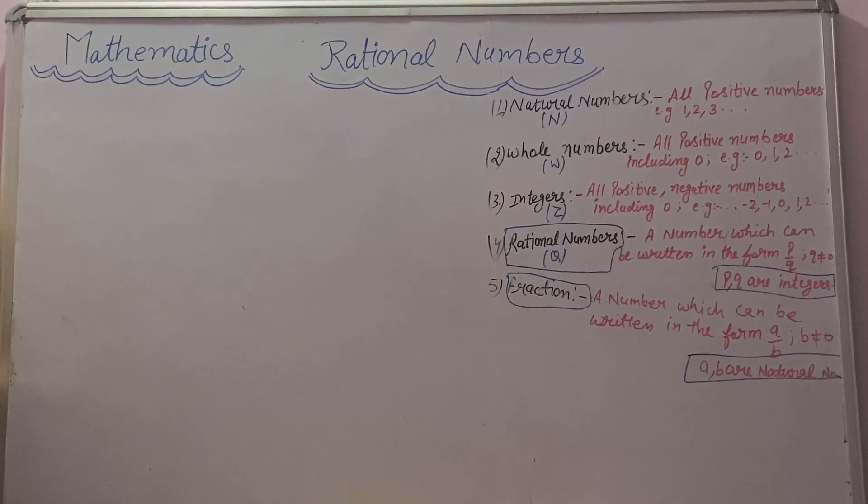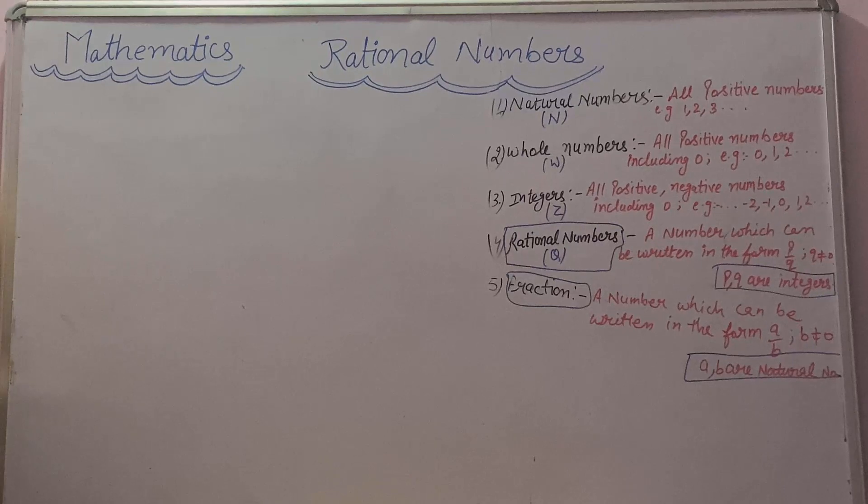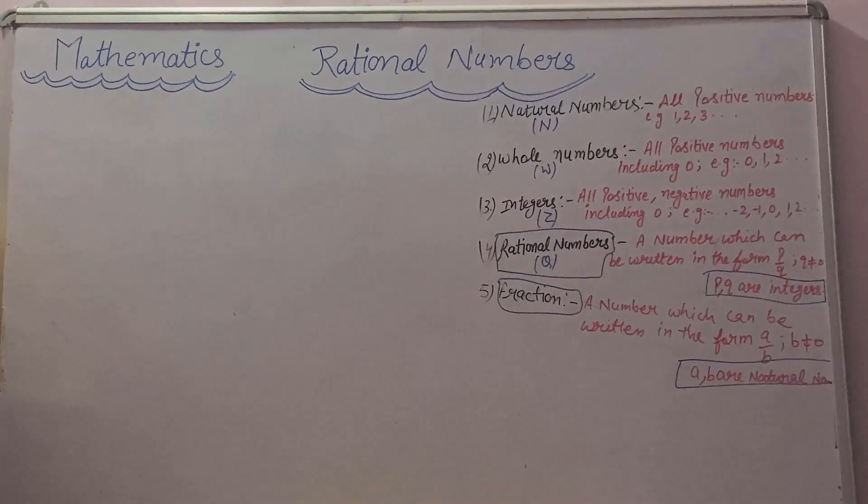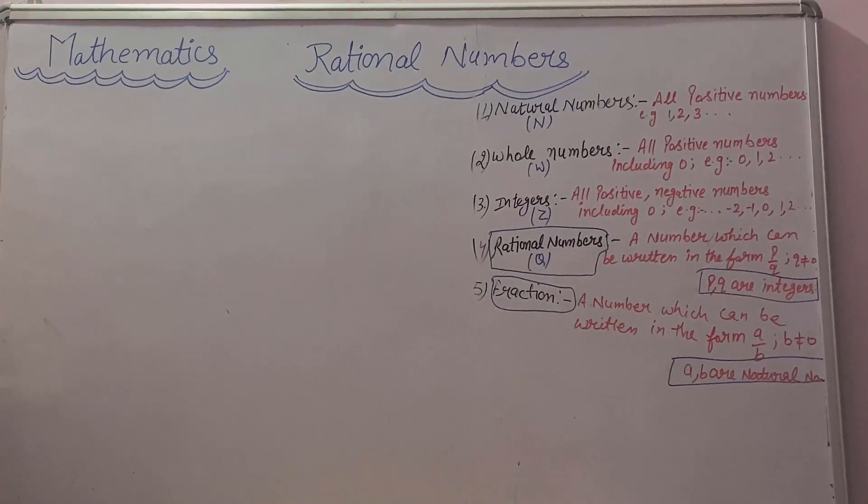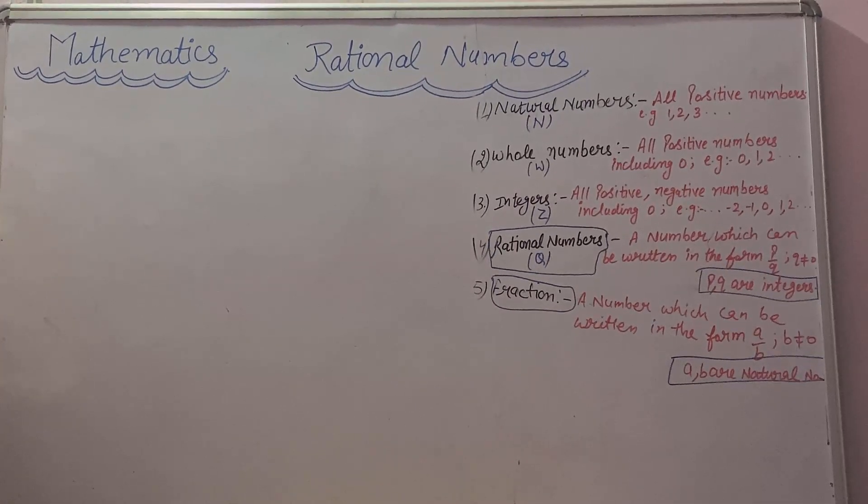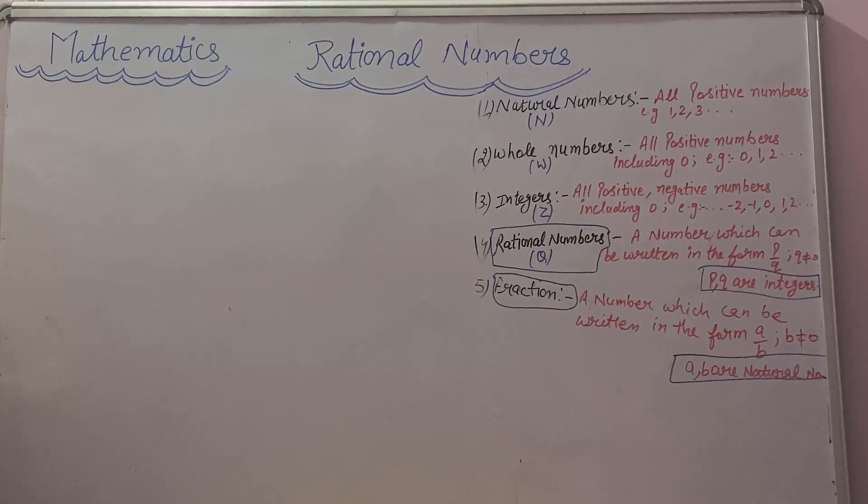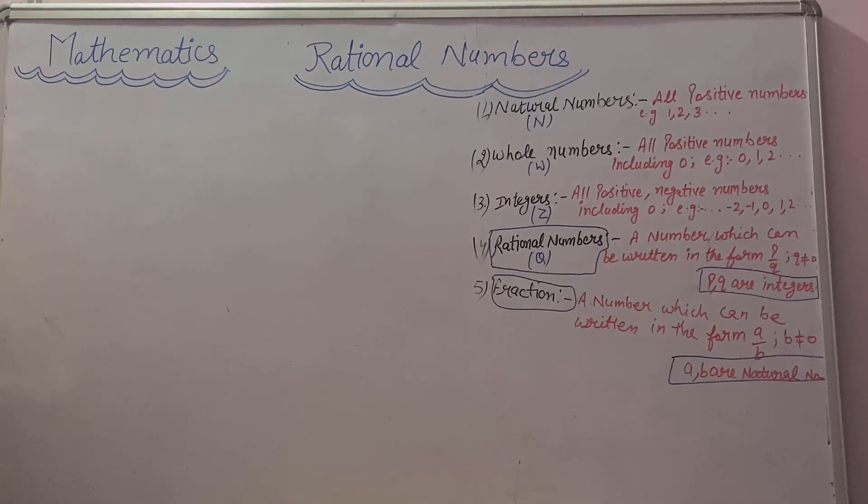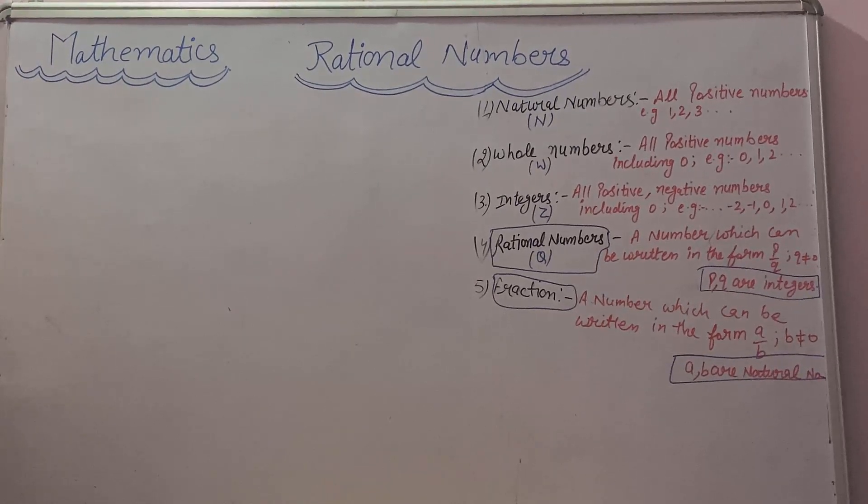Third one is integers. All the positive and negative numbers including 0 are called integers. For example minus 2, minus 1, 0, 1, 2 up to infinite. And we denote integers by capital Z.